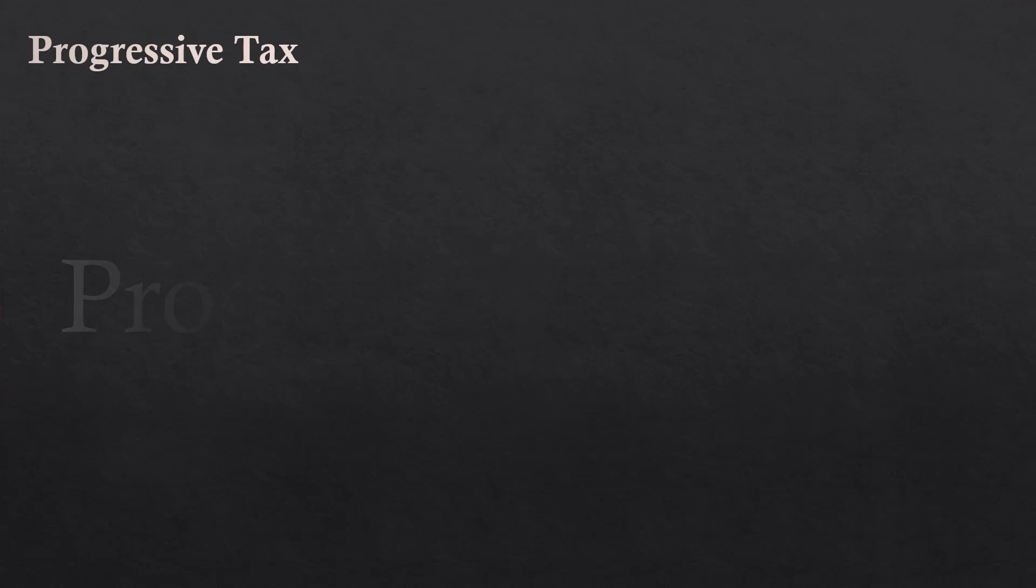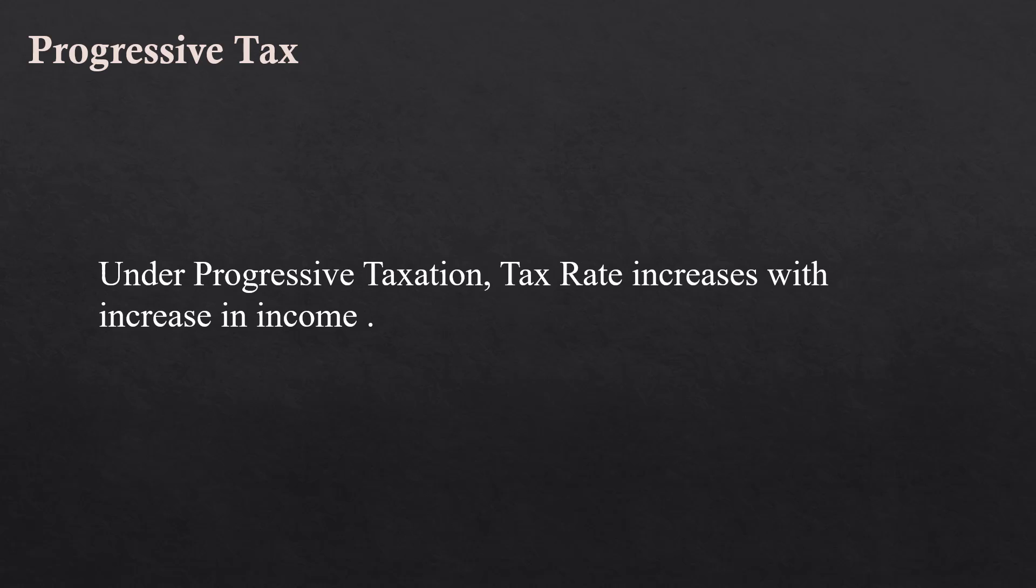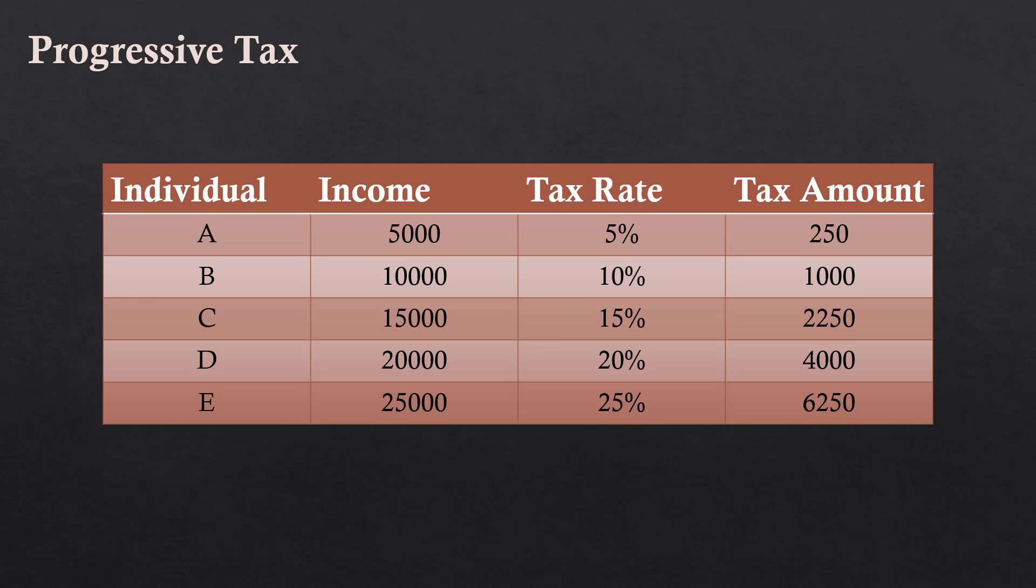Progressive taxation. Under this system, tax rate increases with increase in income. Look at this table. 5% tax is imposed on Rs. 5000 income. 10% is applied on Rs. 10,000 income. Thus, tax rate grows progressively with income. A lower tax rate is applied to lower income. A higher tax rate is applied to higher income.